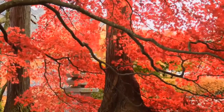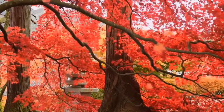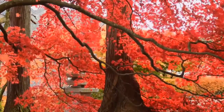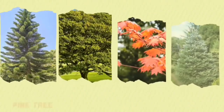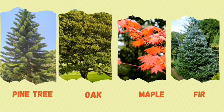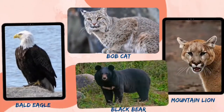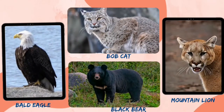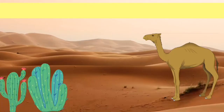Few examples of organisms found in temperate forests are Pine, Oak, Maple, Fir, Bald Eagle, Bobcat, Mountain Lion and Black Bear.